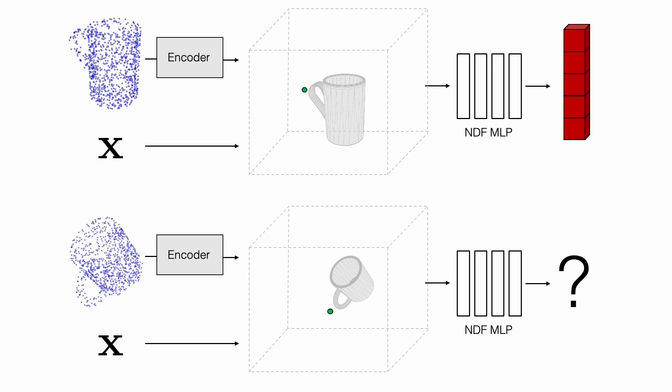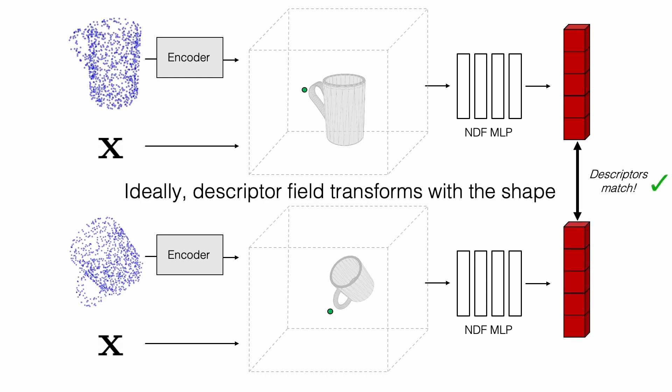However, we must also consider what might happen if the object is in a different pose. If we naively use these features as descriptors, rotating the mug and the queried point together could lead to a new descriptor value even though the point is still near the handle of the rotated mug. We instead desire to have a joint transformation of the object point cloud and the query point leave the descriptor value unchanged since the point would have the same position relative to the object.